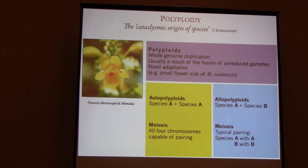Sometimes it also results in novel adaptations, such as the small flower size of Mimulus suquensis. In allopolyploids, what's really interesting is that in meiosis, you usually have the chromosomes of species A pairing together and the chromosomes of species B pairing together. If this doesn't happen, there are actually really important consequences.